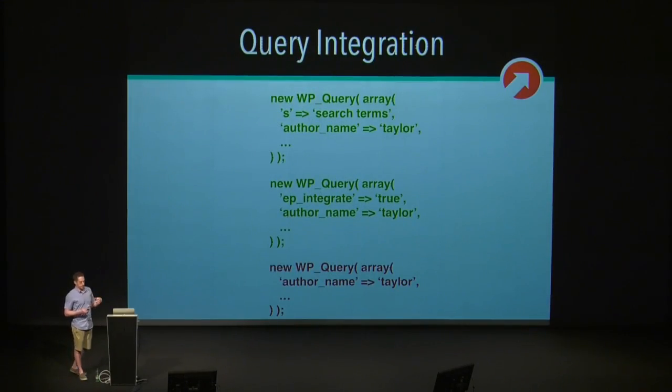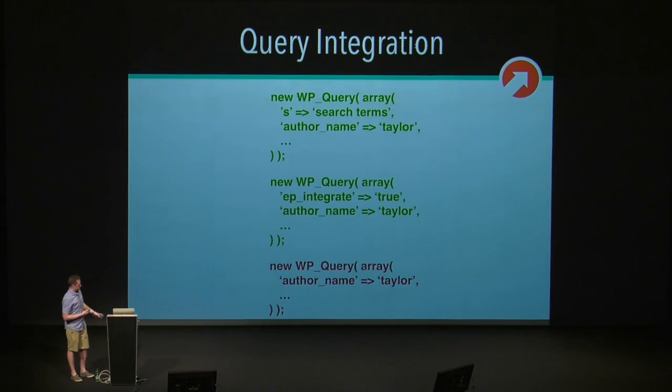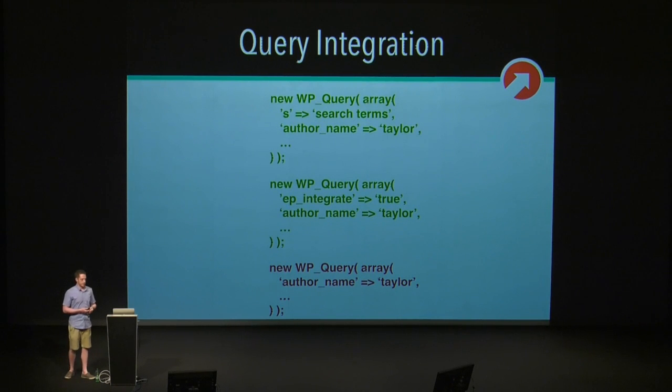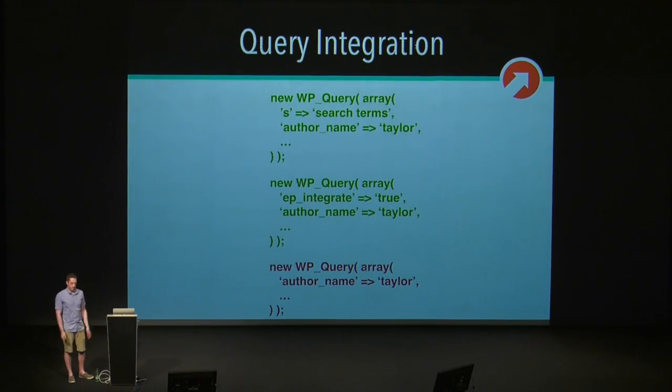One of the most important things to understand is that ElasticPress is only going to integrate with your query if a special parameter, EP_integrate, is passed to the query. So you don't have to worry about activating ElasticPress and it suddenly breaking your entire website — it listens for that special parameter. And if you have the search integration enabled, it's also going to look for the S parameter and integrate with your search queries. The first two queries highlighted in green are going to be integrated with ElasticPress: the first because of the S search parameter, and the second because we're using the EP_integrate parameter. The third query is just a normal query and will go through MySQL as usual.